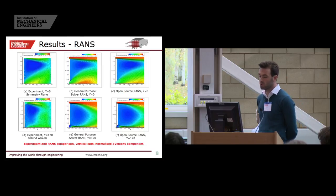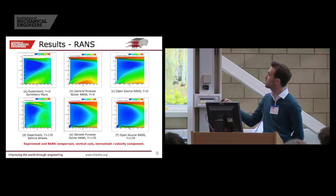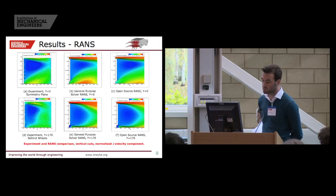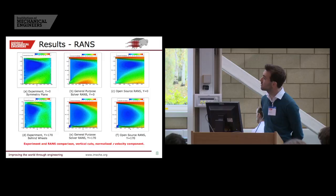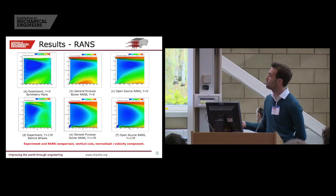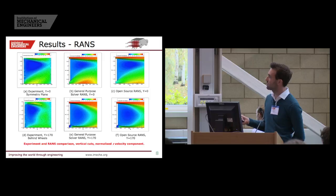Moving on to results — first the steady state RANS. The images show planes in the wake: the centre plane, straight down the middle. Flow is moving left to right, showing the normalised X-velocity, or streamwise velocity component. Experiment on the left, general purpose RANS in the middle, and open source RANS on the right. You can immediately see good agreement, especially in the low velocity structure. The only differences appear to be restricted to the flow emerging from the diffuser region, in the angularity and speed of that flow. But generally a good agreement with the experiment.